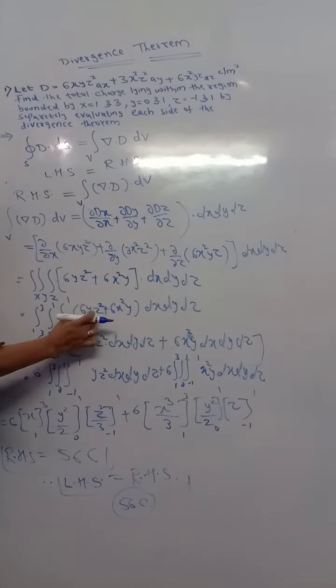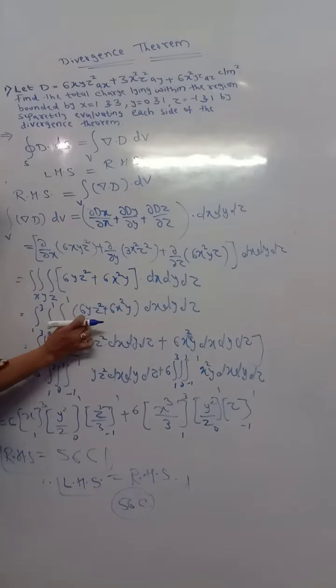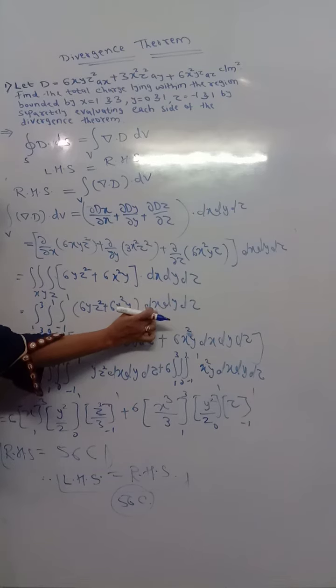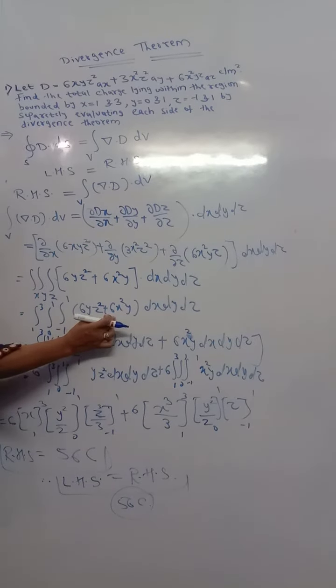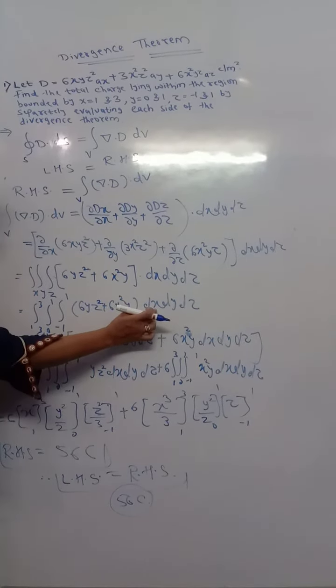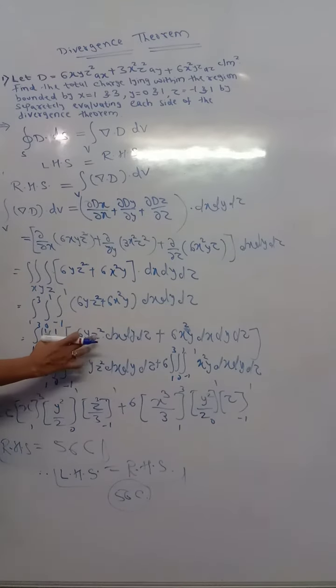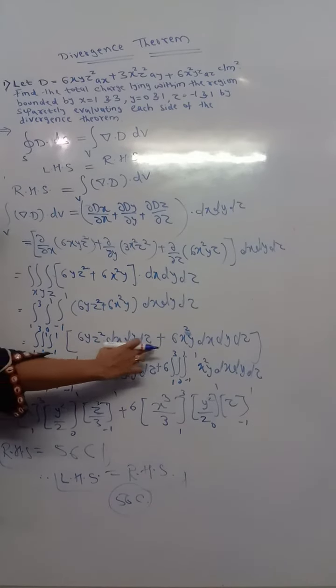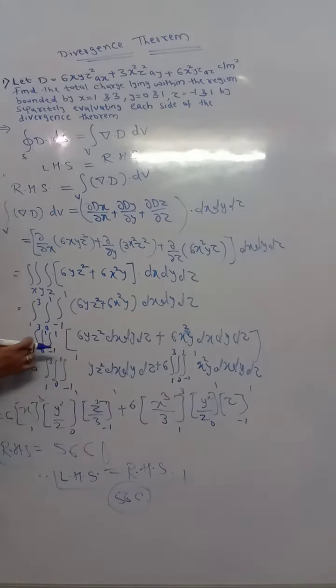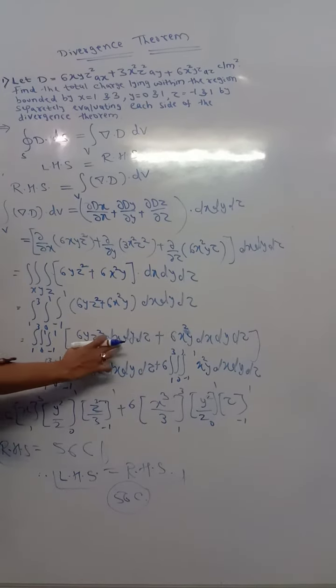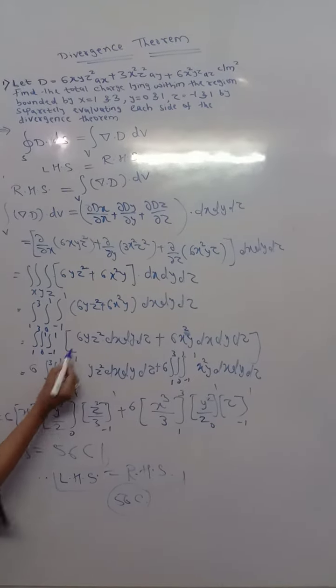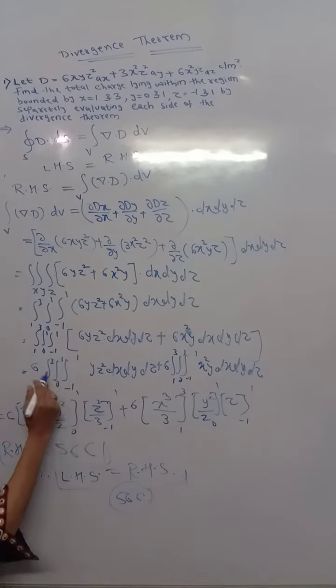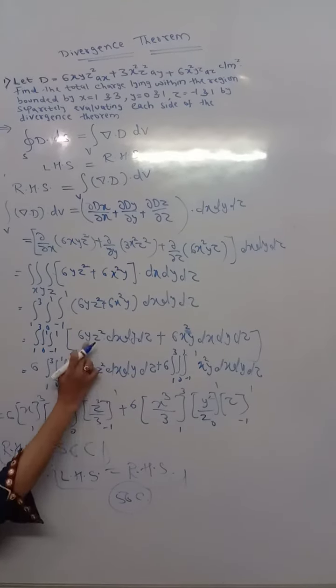And if we are going to multiply the volume differential in terms of xyz, this term, this term, so one time 6yz^2 will be multiplied with dx dy dz, plus 6x^2y will multiply with dx dy dz once again. So I have separated out here this part plus this part, and apply the limit. This limit will be applicable to this part, this part.